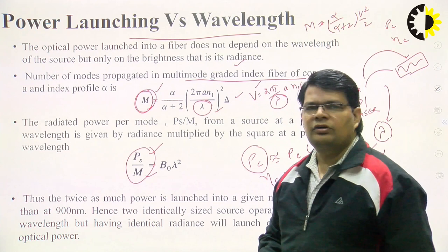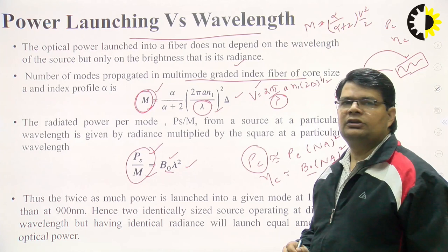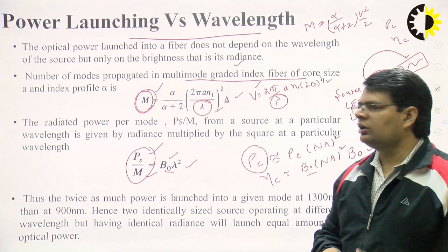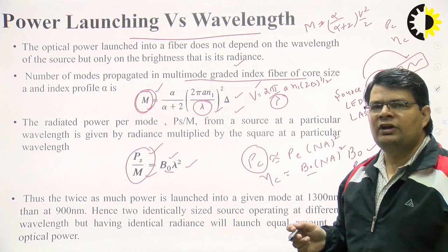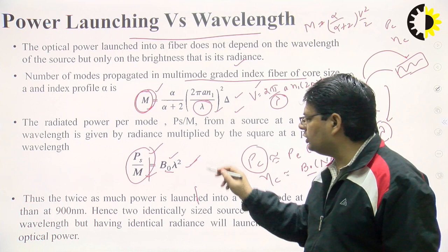The power launched or coupled into the fiber depends on the brightness of the source B-naught as well as the operating wavelength. To summarize: the total power launched into the optical fiber does not depend on wavelength; however, the number of modes in a multimode fiber depends on wavelength, and correspondingly the power distribution per mode inside the optical fiber also depends on wavelength.